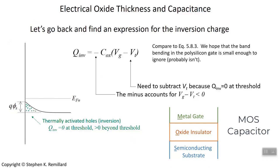Then we shouldn't write Q inversion is the oxide capacitance times the gate voltage. That would be wrong because the inversion charge begins not at gate voltage equals zero. It begins at gate voltage equals threshold voltage.